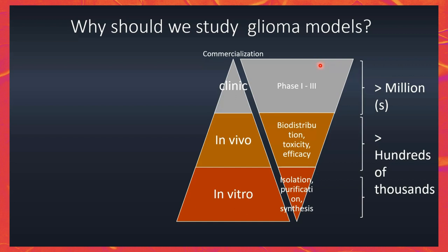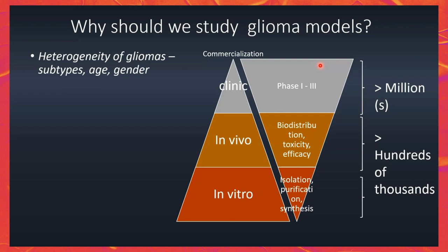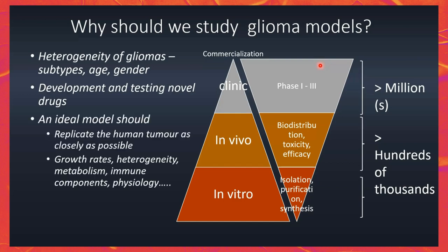Not only that, we know that GBMs are heterogeneous in nature. There are several subtypes, age varies, and gender also plays a role. If you really want to do a controlled study, you can't really do it in patients. I already mentioned developing and testing drugs — so you need a model.